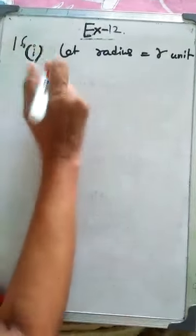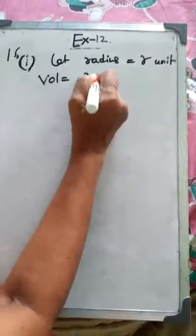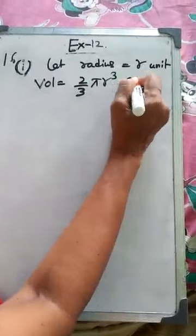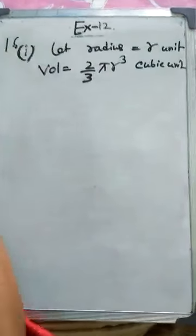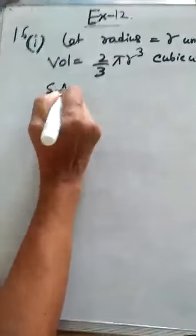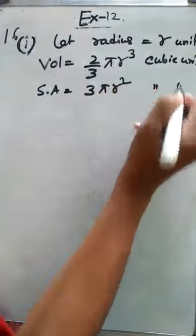The numerical value of the volume, so volume is equal to 2 by 3 π R³ cubic unit. And the whole surface area, surface area is equal to 3π R² square unit.